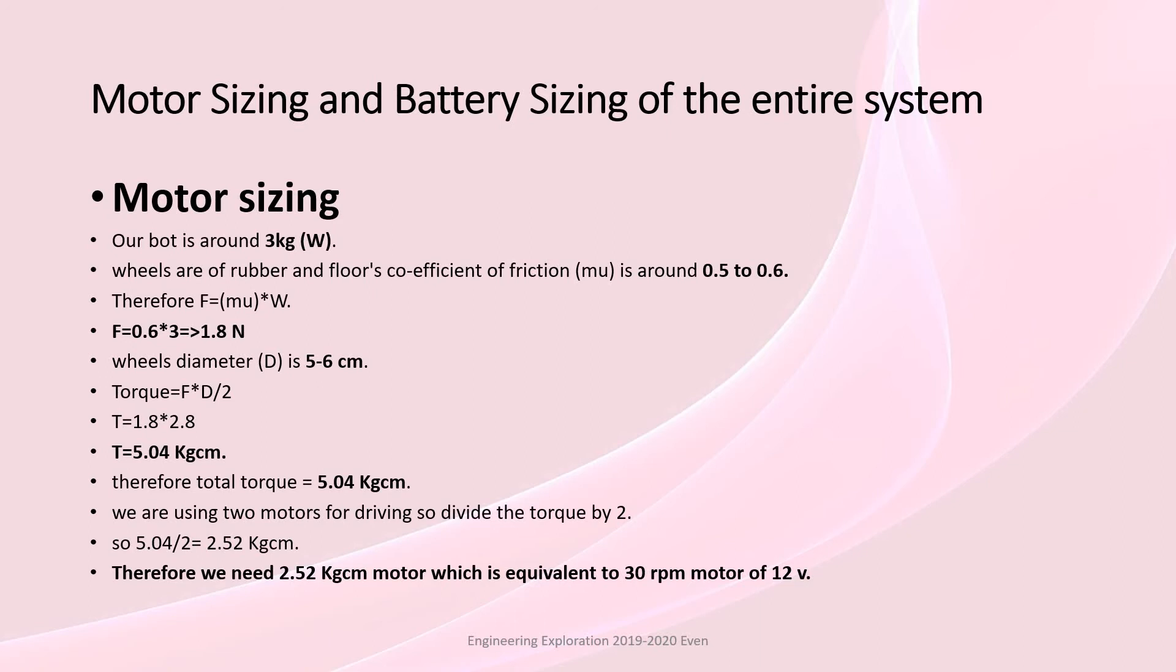Motor sizing and battery sizing. Our bot weighs around 3 kg, so we had to do calculations and decide the best choice for the motors, and we came to conclusion that 2.52 kg cm motor, which is equivalent to 30 rpm of 12 volt, is the best choice.